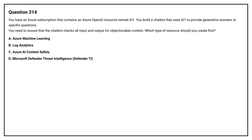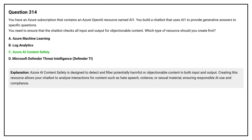The correct answer is Option C: Azure AI Content Safety. Azure AI Content Safety is designed to detect and filter potentially harmful or objectionable content in both input and output. Creating this resource allows your chatbot to analyze interactions for content such as hate speech, violence, or sexual material, ensuring responsible AI use and compliance.